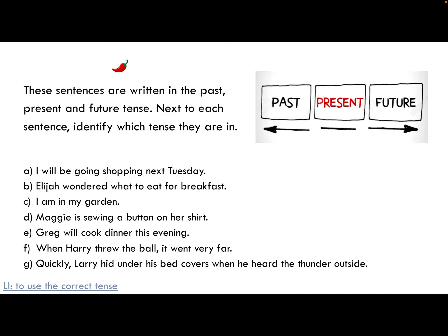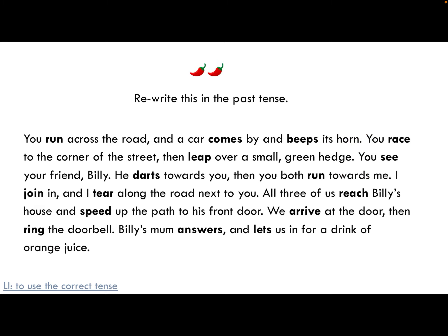So these sentences down here — this is our one-chili challenge. Remember we've got this to help us: past, present — that's now — and future. Here we've got sentences A, B, C, D, E, F, G, written in the past, present, and future tense. Your job is to identify which ones are past, which ones are present, and which ones are future. You can write them out with the word next to them, or sort them into a table or groups.